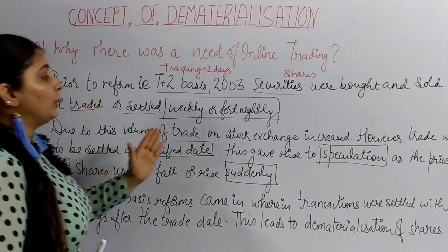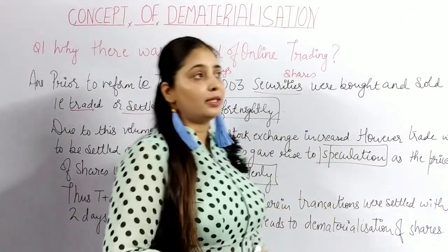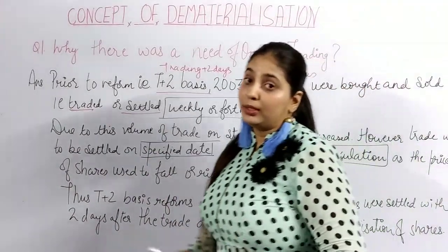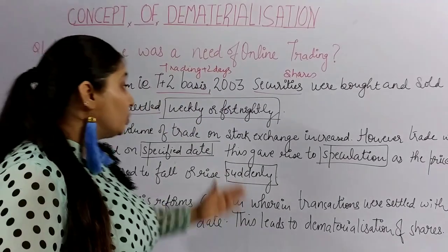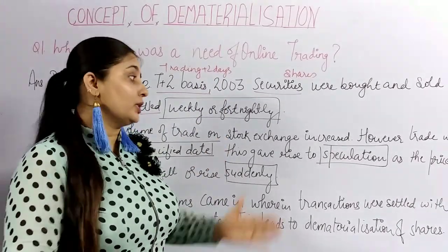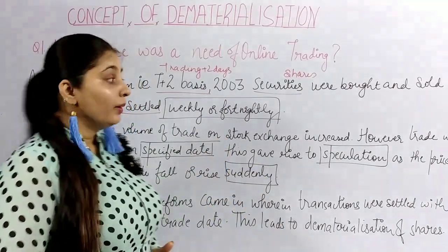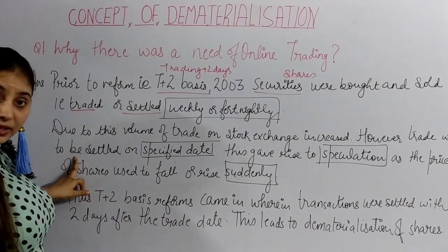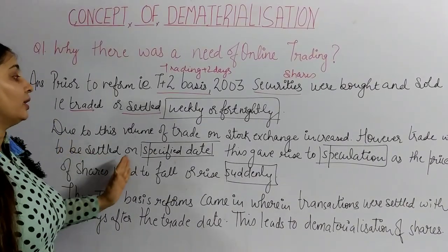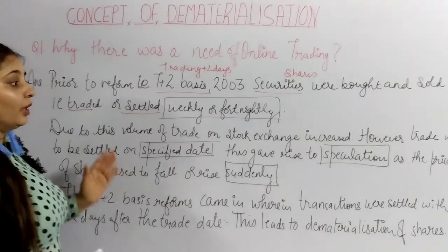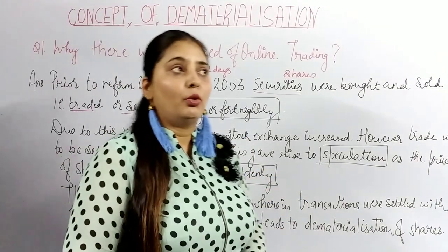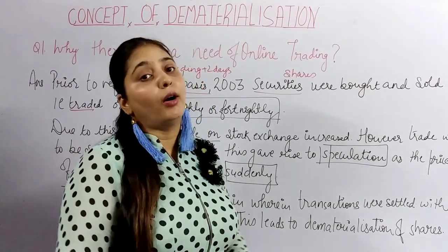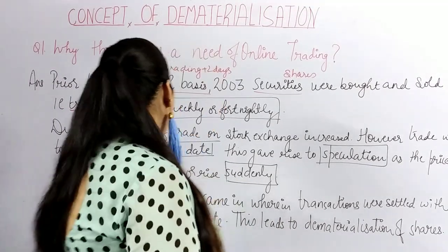Settlement, meaning when the actual cash is paid or received, used to occur within 7 days or within 14 days. Because so much time was taken, the volume of trade on the stock exchange increased. And as per the investors, transactions were settled only on specified dates. This gave rise to speculation — that is, a sudden rise or fall in the price of equity shares.